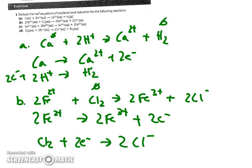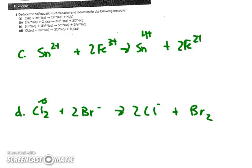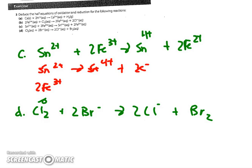Looking at 3C: Sn 2+ becoming Sn 4+, so the more positive side needs two electrons. And then 2Fe 3+ is going to become 2Fe 2+, meaning two electrons have been gained by the iron.